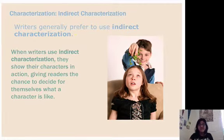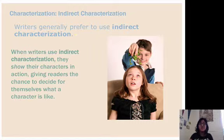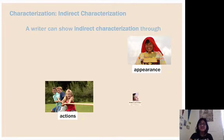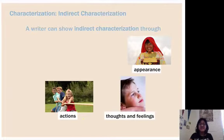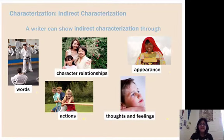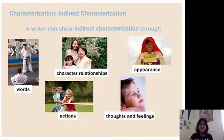That's why authors prefer to use indirect characterization — it still allows their readers some agency to make judgments about the character. A writer can show indirect characterization through appearance, actions, thoughts and feelings, words that the character says, and character relationships — how does this character interact with others?